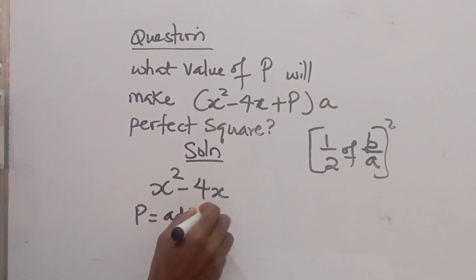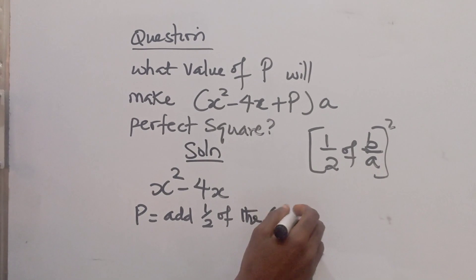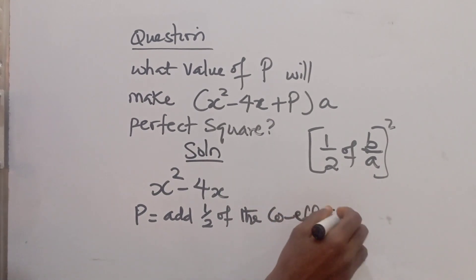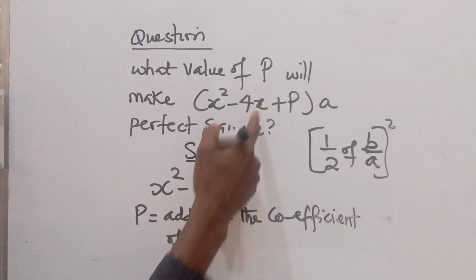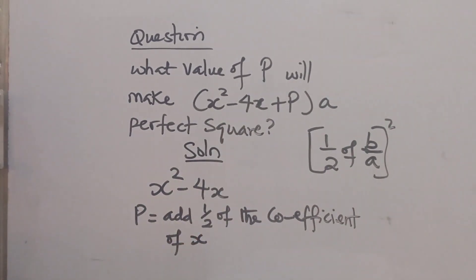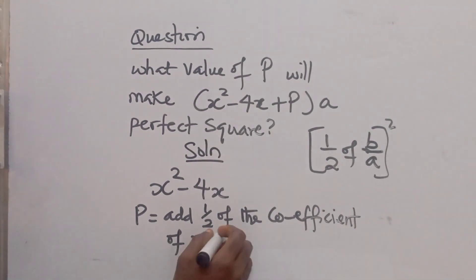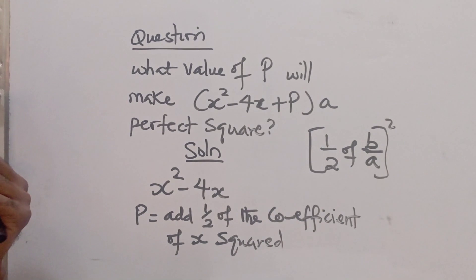Half of what? The coefficient of x squared. So that would be our value of p.